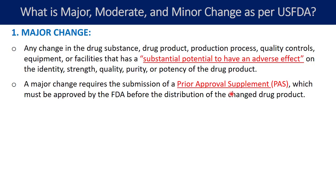A major change requires the submission of a Prior Approval Supplement (PAS), which must be approved by the FDA before the distribution of the changed drug product. That means the major change needs to get approval from the FDA before you start manufacturing or distributing the product with the proposed change.